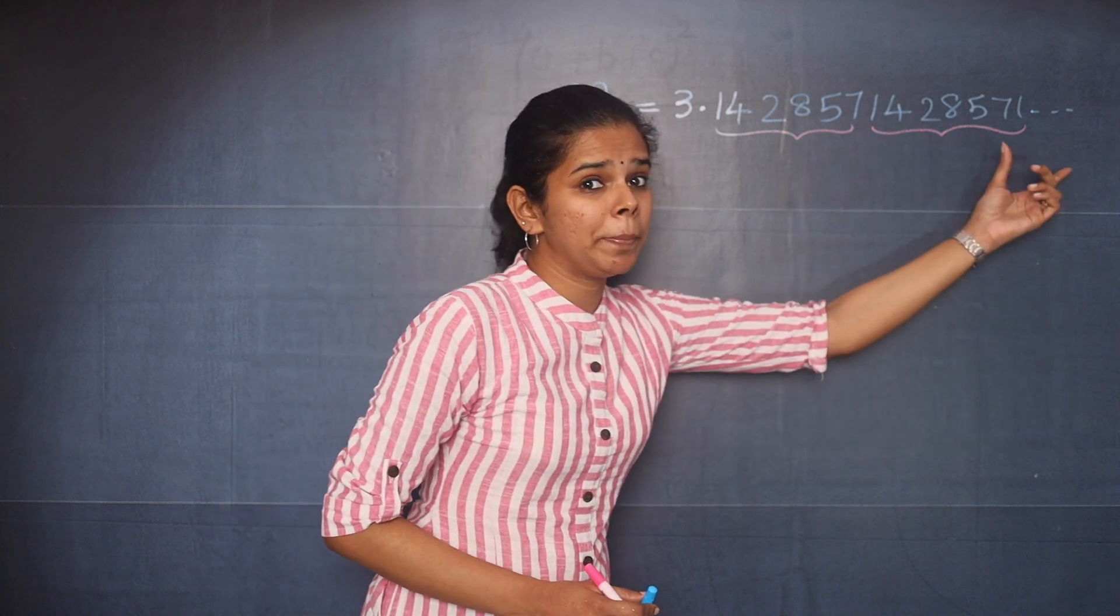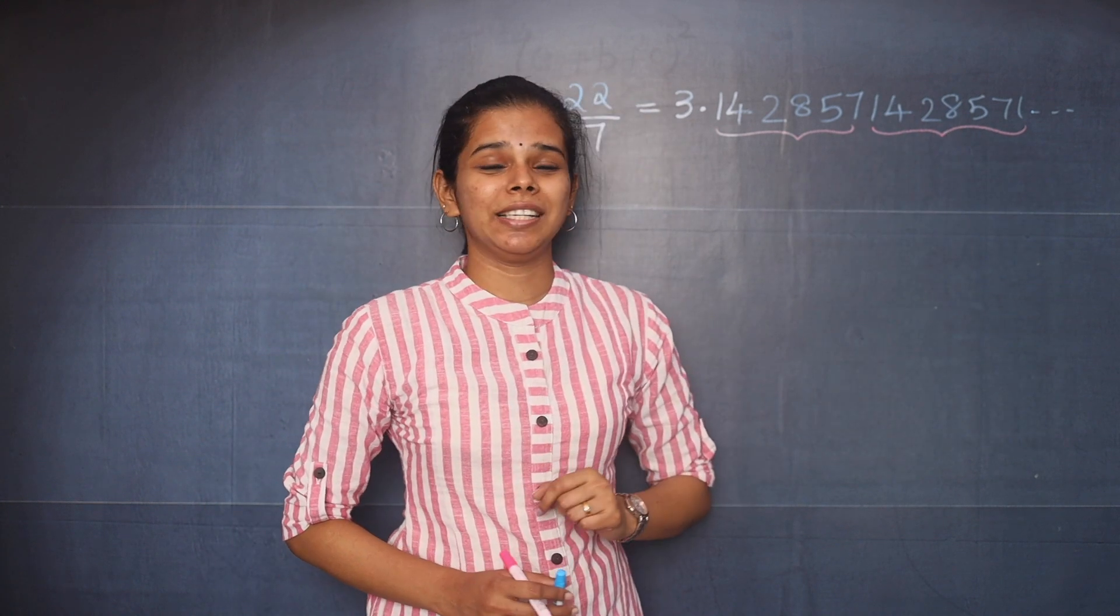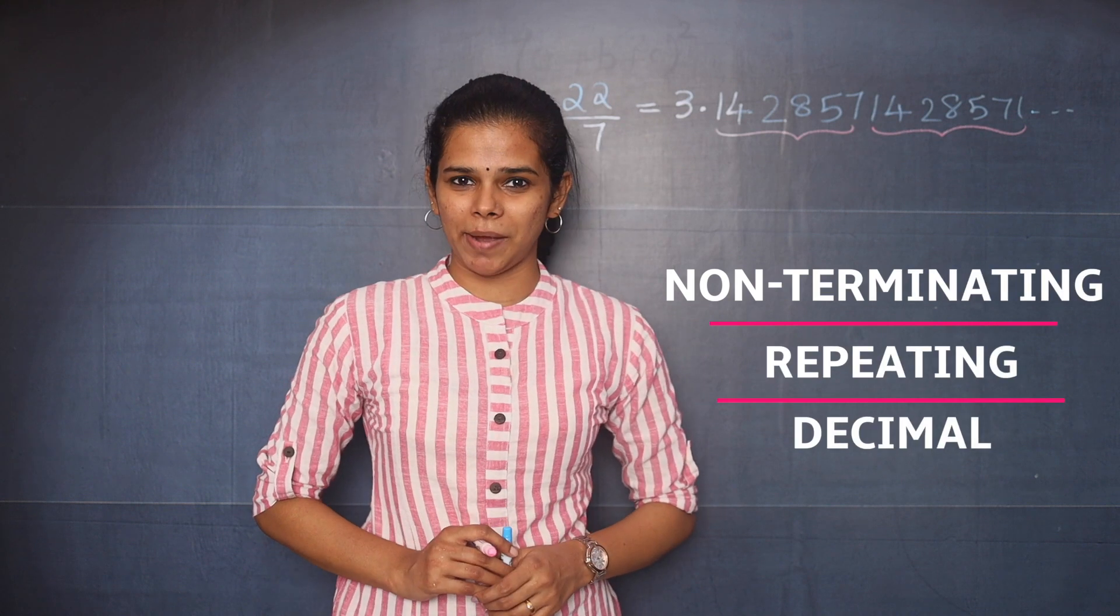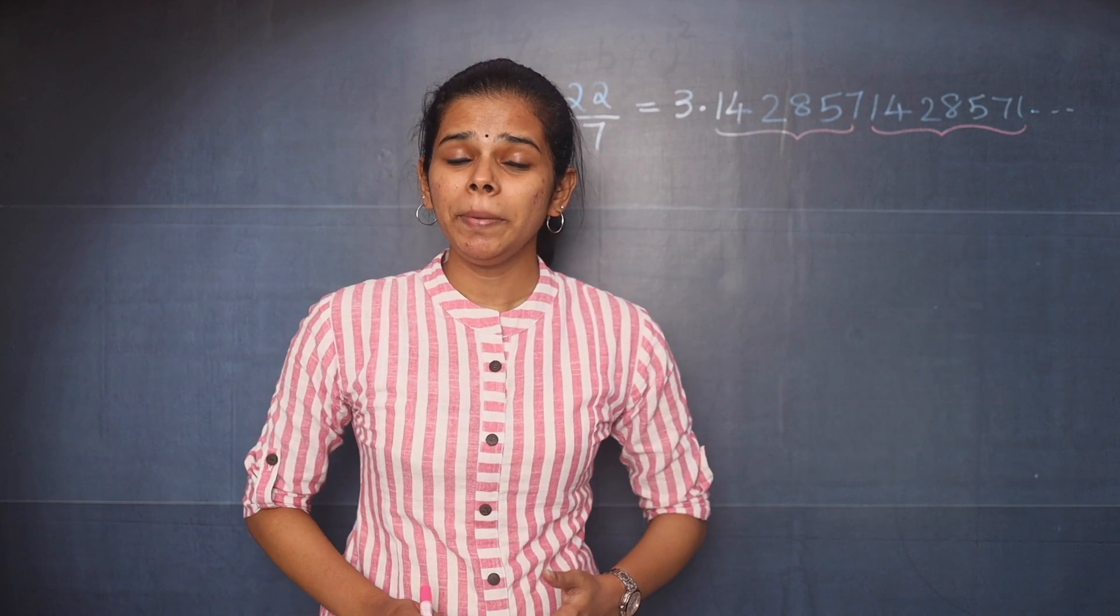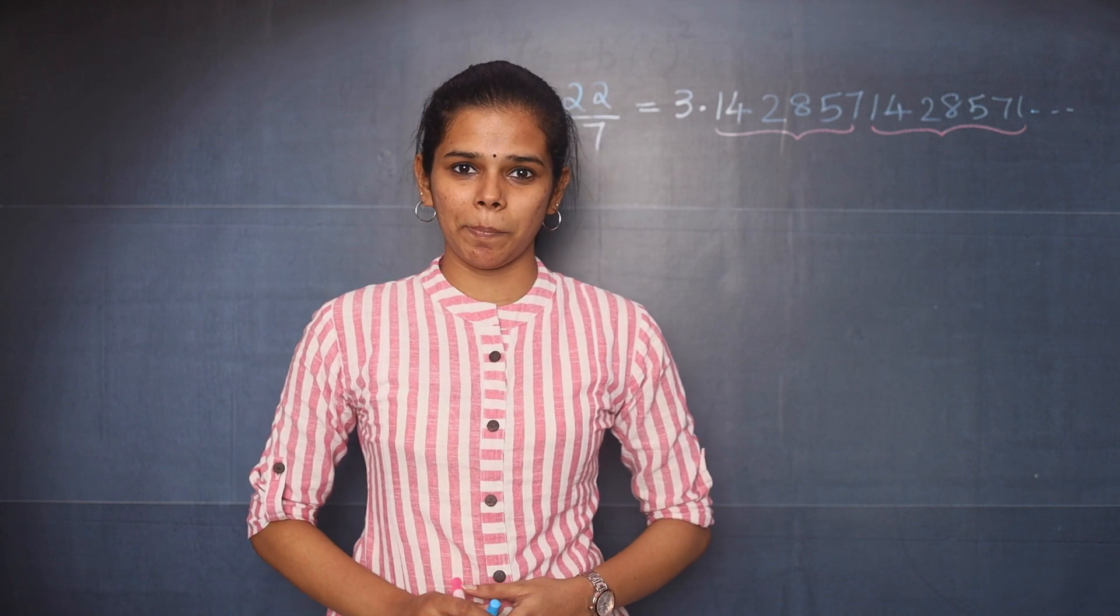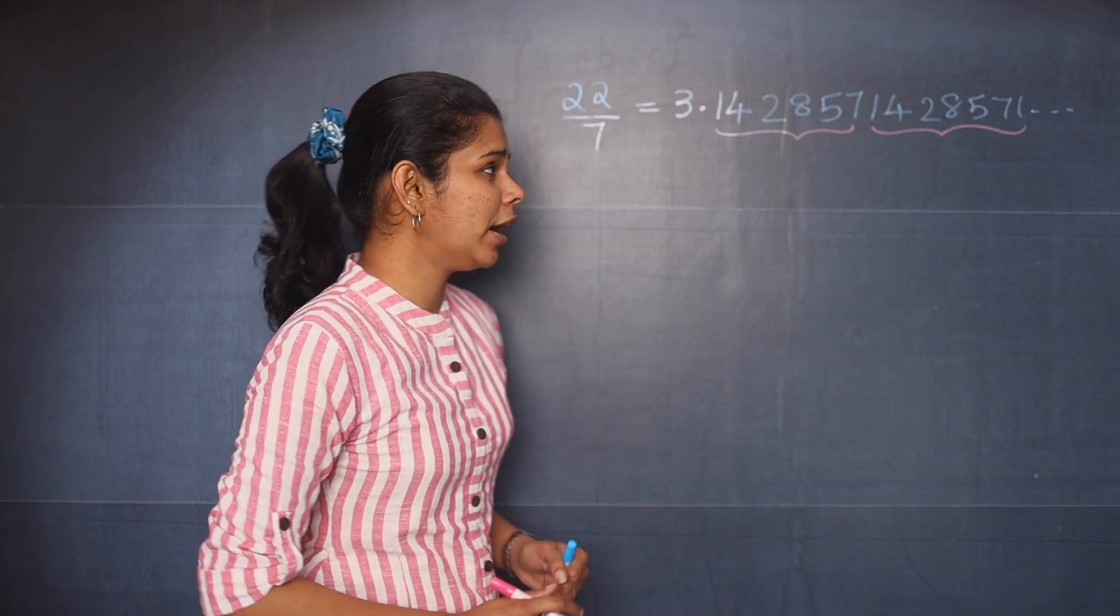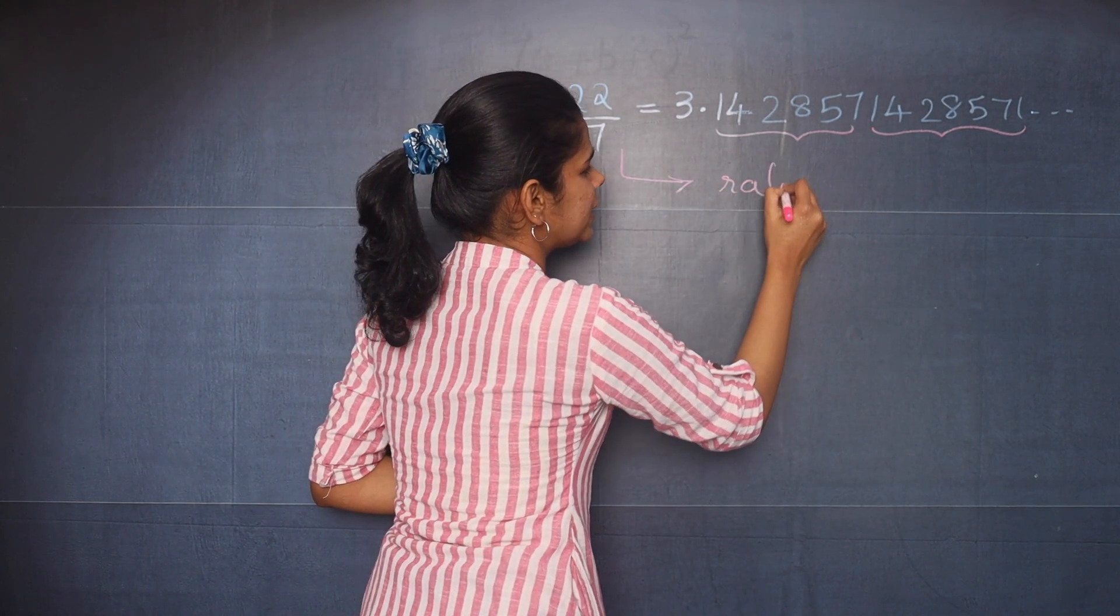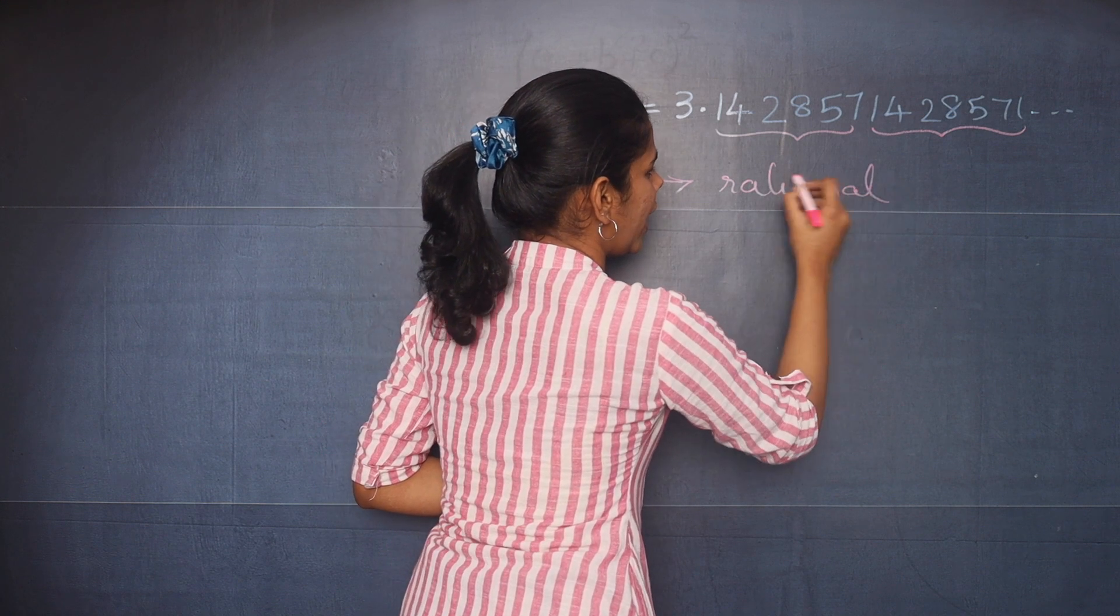Is this terminating or non-terminating? This is a non-terminating repeating decimal expansion. A non-terminating repeating decimal expansion is always a rational number. So one confusion is clear now. You can conclude that 22 by 7 is a rational number.